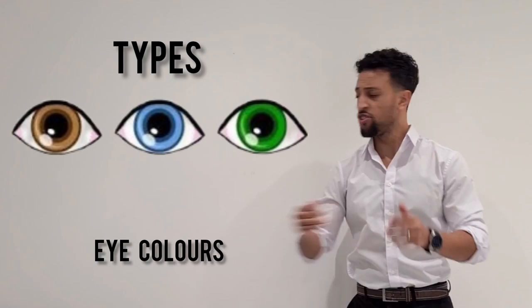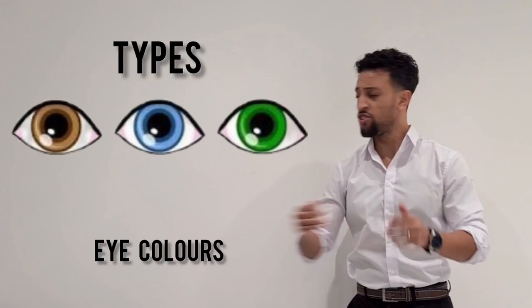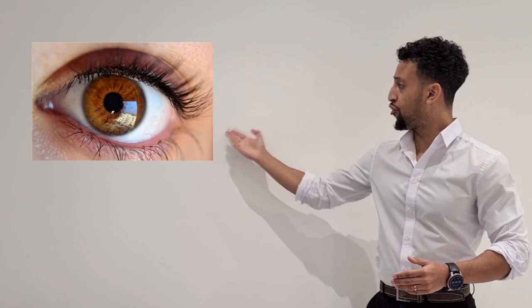Every gene has several types, like all the colours if we look at eyes. Listen close as I show the deal — every gene type's called an allele. A pair of these gives you features like what you see; we call the phenotype. In science terms we know how to write the alleles in pairs — it's called the genotype.